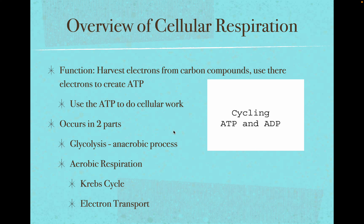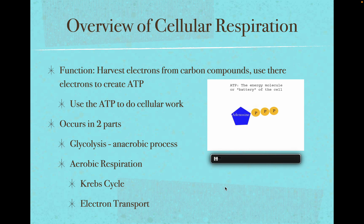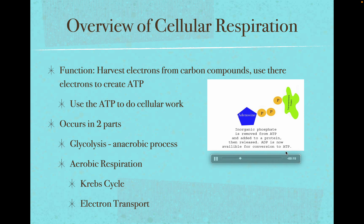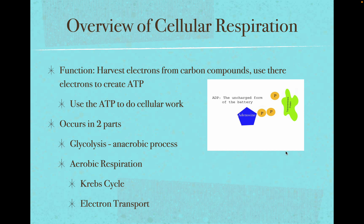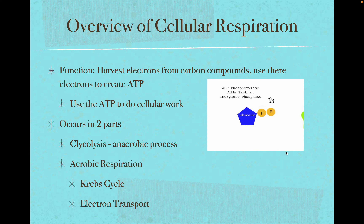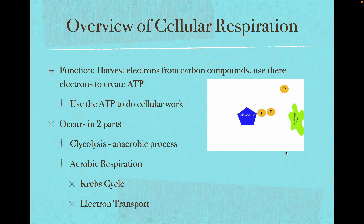We're talking about the process of getting energy from glucose into ATP so that we can continue to cycle ATP. ATP is used, a phosphate and an ADP are left in the cell. Energy from glucose is then used to put that phosphate back onto ADP, giving you ATP in a continuously recharging battery.